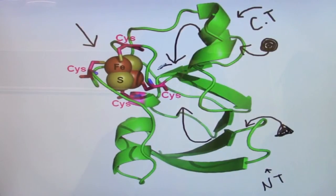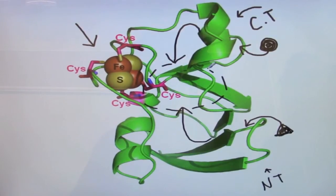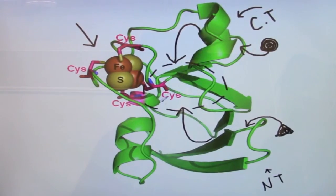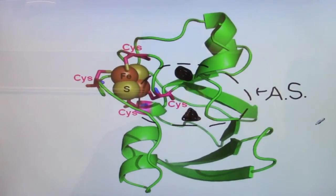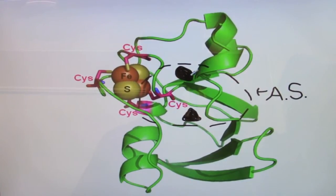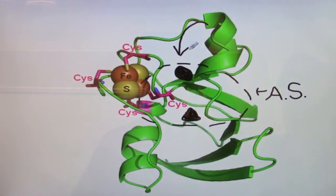This results in the active site of the protein at the interface of the two domains, as shown by this dotted line. Here we can see we have our bound NADP+, as well as our FAD cofactor, that have undergone the conformational change resulting in the active site.